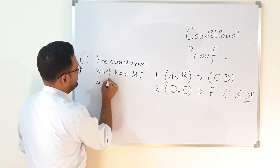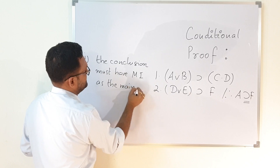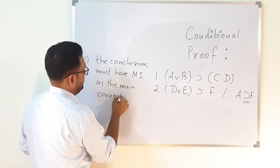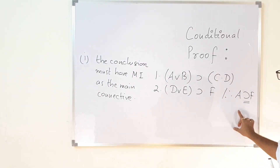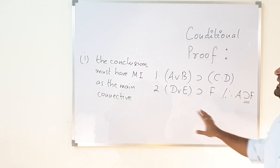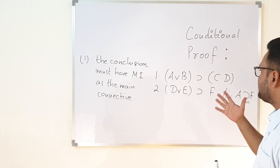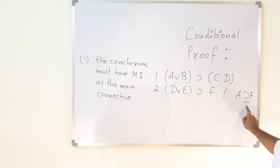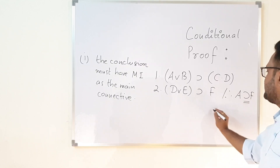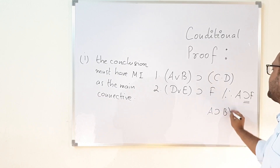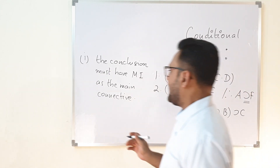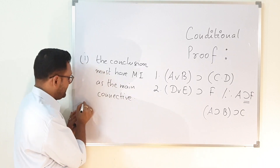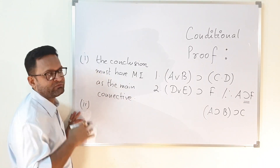So the condition is that the conclusion must have material implication as the main connective. You need an implication in the conclusion — without that, you cannot apply conditional proof. Second, if there are more than one implication in the conclusion, such as A implies B implies C, you can apply conditional proof more than once.